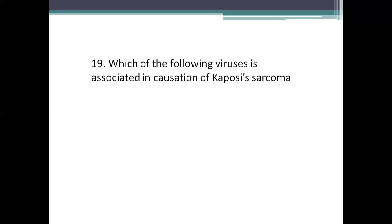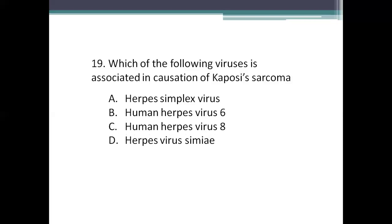Next question: which of the following viruses is associated with causation of Kaposi's sarcoma? Option A: herpes simplex virus. Option B: human herpes virus 6. Option C: human herpes virus 8. Option D: herpes virus simiae. The right answer is human herpes virus 8 (HHV-8), which causes the malignancy called Kaposi's sarcoma. This is mainly seen in HIV-infected individuals, and the virus is detected using PCR.